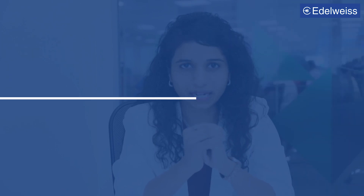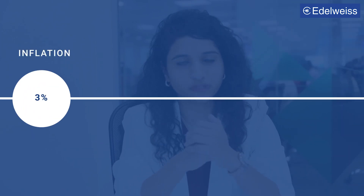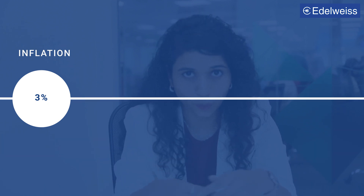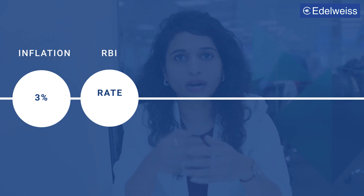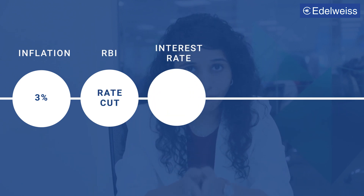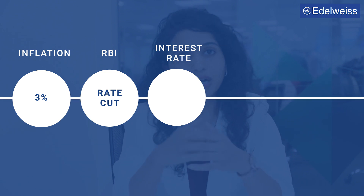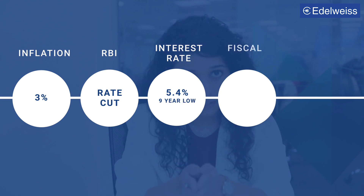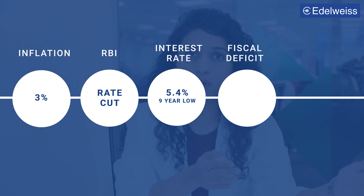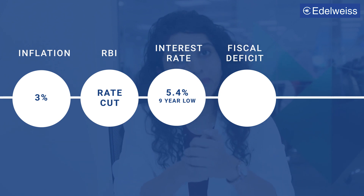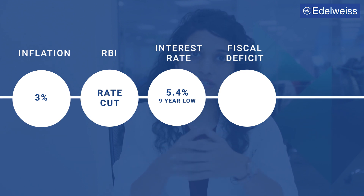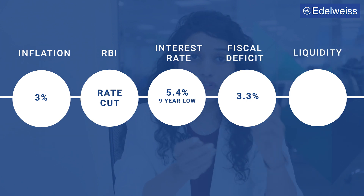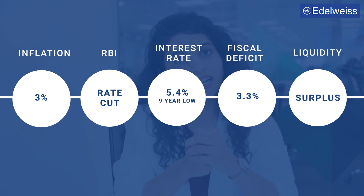Currently, all the above three conditions are being met. Inflation is hovering at about 3%. Last quarter's growth was below 6% and at a 5-year low. This has forced the RBI to cut interest rates — rates have fallen by 110 basis points in 2019 and currently stand at a 9-year low of 5.4%. On the fiscal deficit front, as we saw in the last budget, the government is following a path of fiscal consolidation and further reduced the fiscal deficit target to 3.3%. The interbank liquidity moved into surplus in May and has remained there ever since.